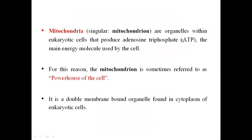We will turn towards the basic introduction of mitochondria. The mitochondria are organelles within eukaryotic cells that produce adenosine triphosphate, we can call it as ATP, the main energy molecule used by the cell. For this reason, the mitochondria is sometimes referred to as the powerhouse of the cell. It is a double membrane bound organelle found in the cytoplasm of eukaryotic cells.